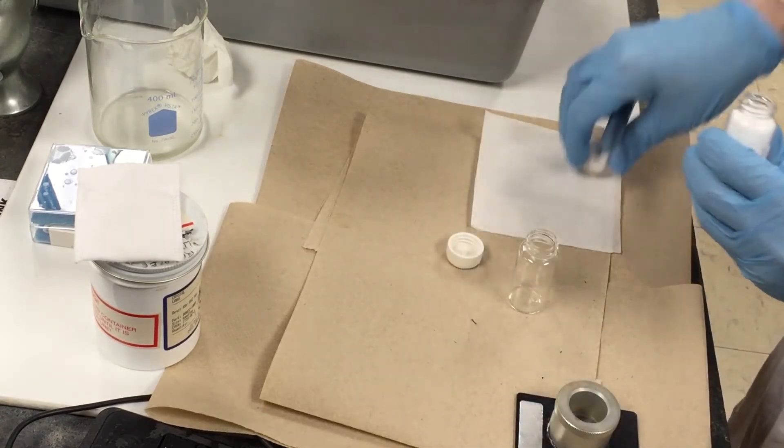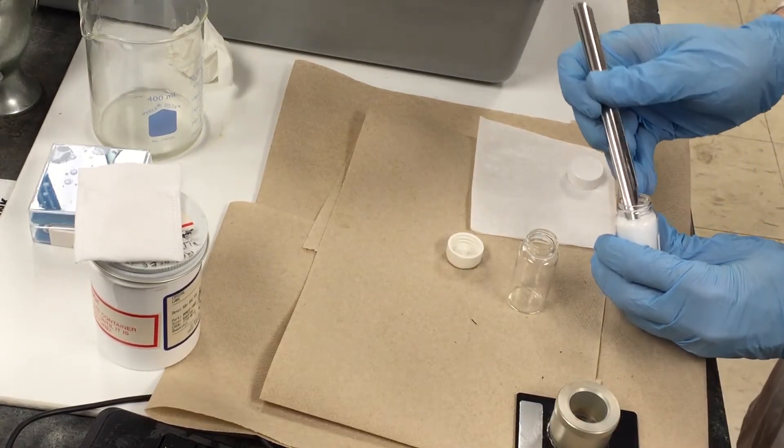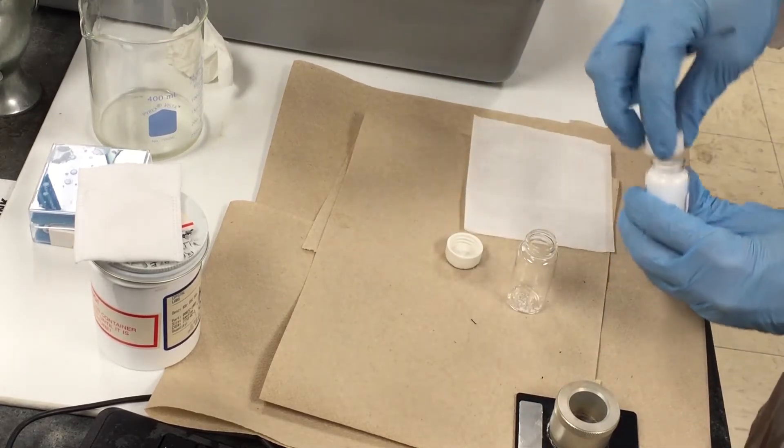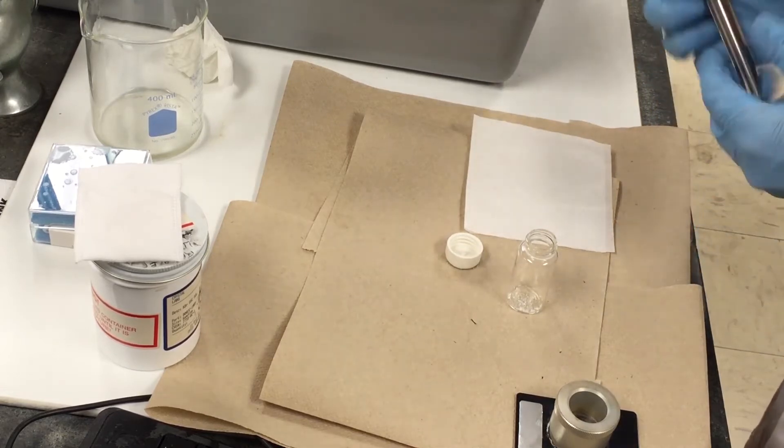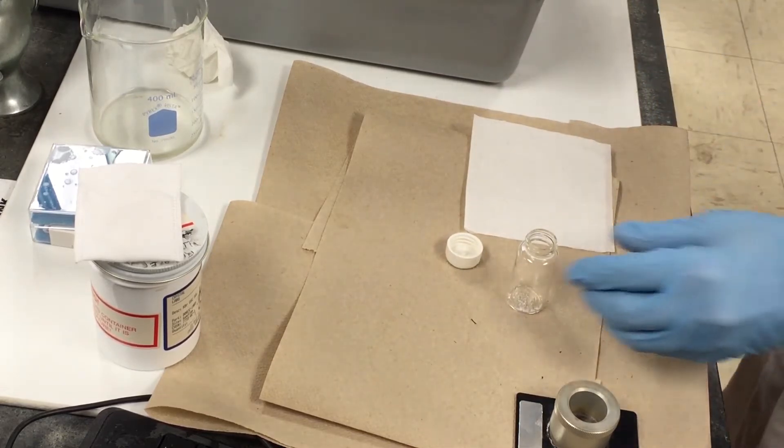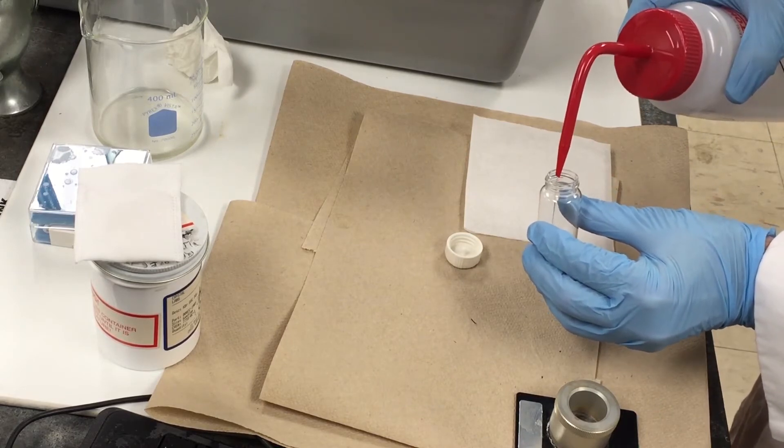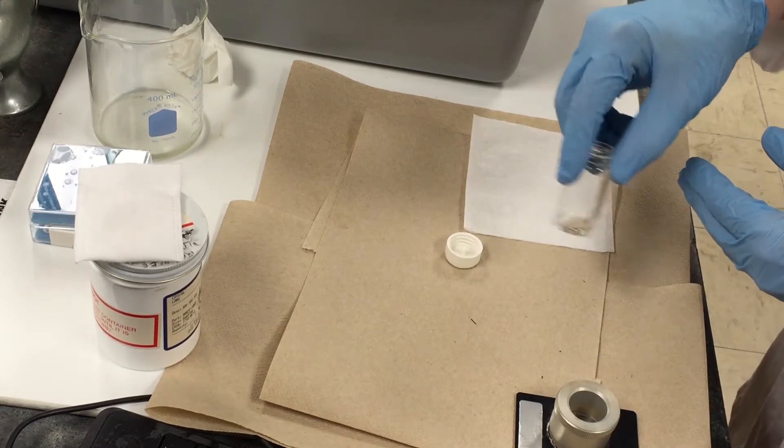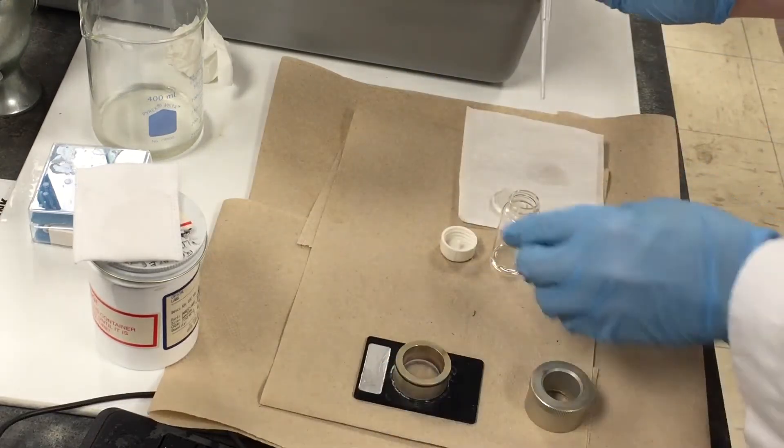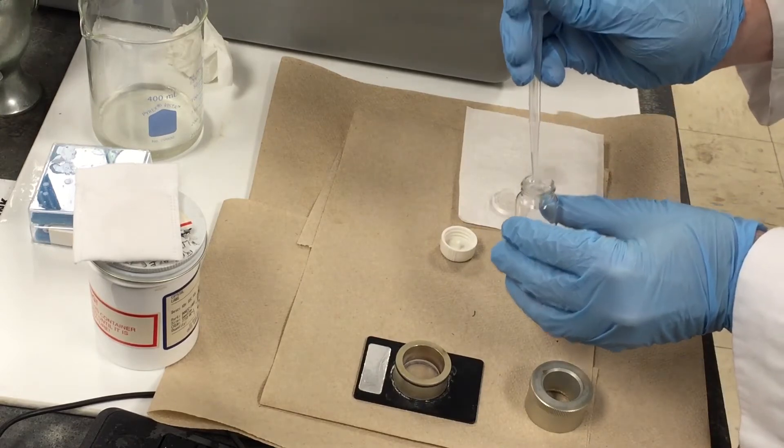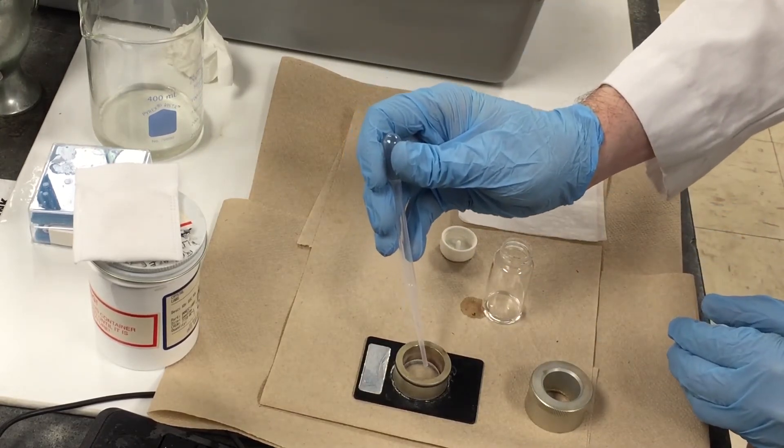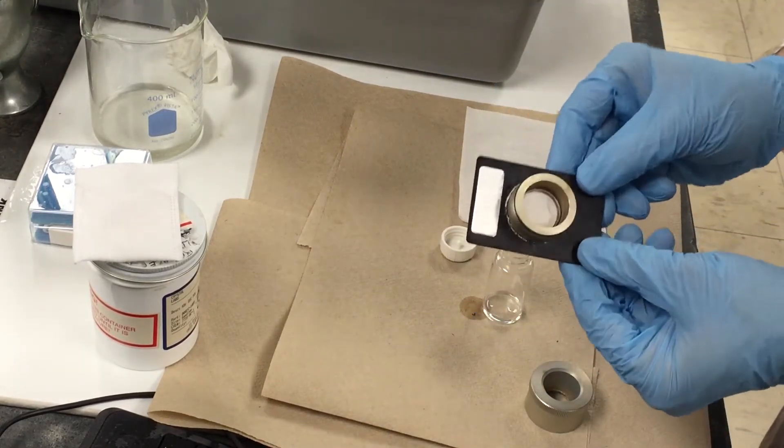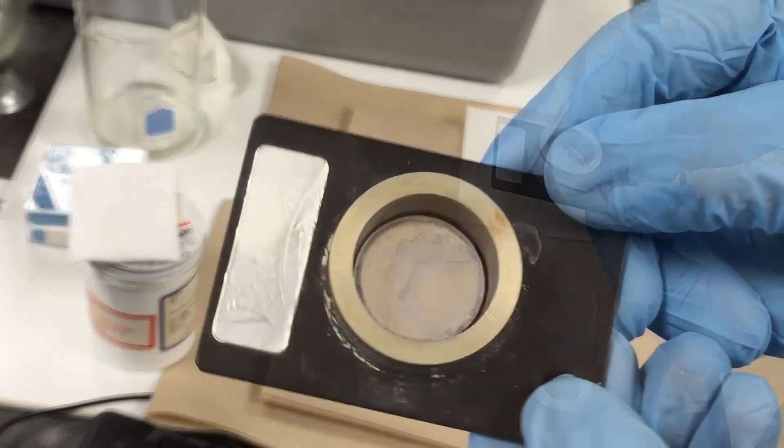Solid samples need to be dissolved in a volatile solvent first. In this case, we're sure the solid dissolves in acetone. Let the acetone evaporate completely, leaving a thin film of the solid.